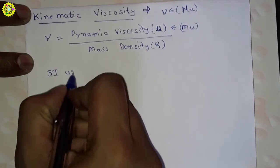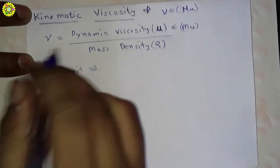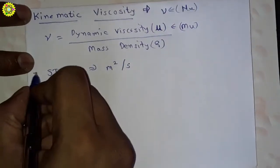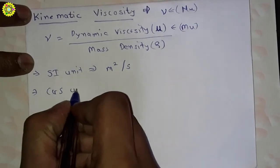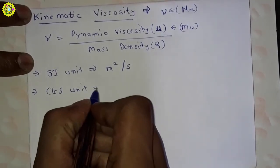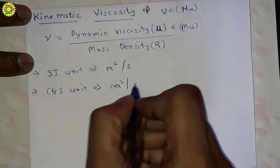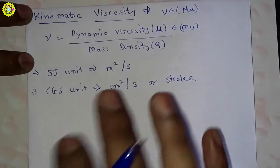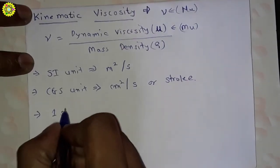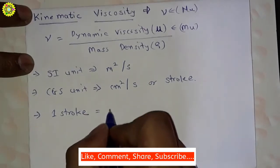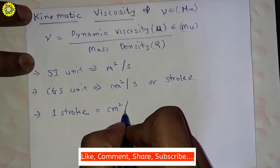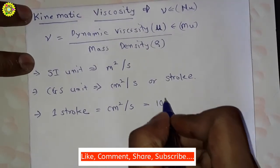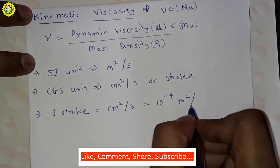The SI unit of kinematic viscosity is meter square per second. The CGS unit is centimeter square per second, also called stoke. One stoke is equal to centimeter square per second, which equals 10 to the power minus 4 meter square per second.